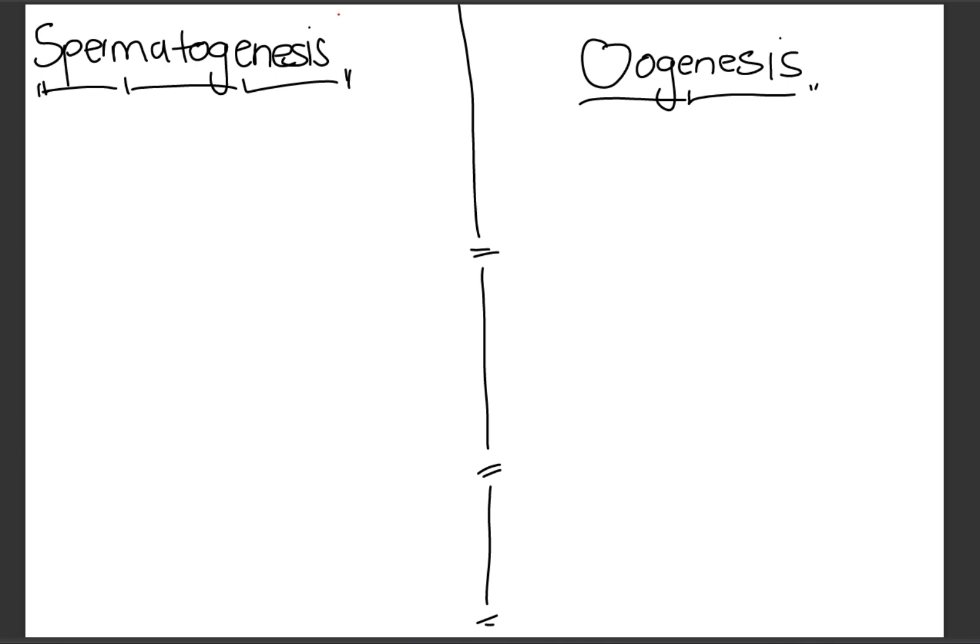Hello everyone. In today's video we are going to be looking at the exam guideline points for the gametogenesis processes — that is spermatogenesis and oogenesis. It is important that you know how to describe both processes when going to write your exam. This is for paper one under the topic human reproduction. The spermatogenesis process is normally about four marks and the oogenesis one is normally about five marks.